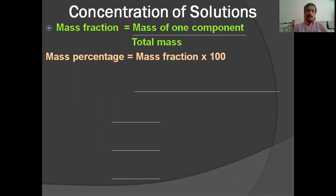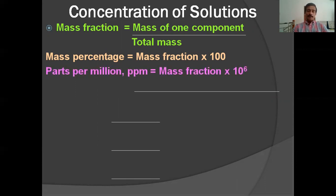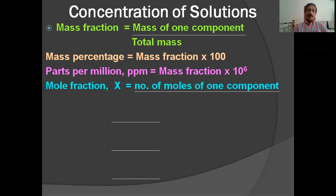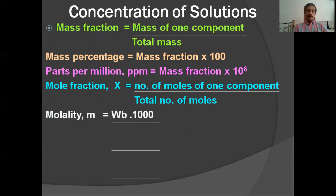Last year you studied it in detail. Parts per million (ppm) is equal to mass fraction multiplied by 10⁶. Now mole fraction, represented as χ (chi), is equal to the number of moles of one component divided by the total number of moles.